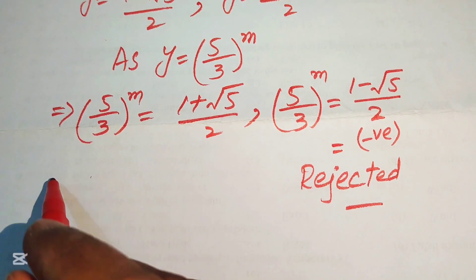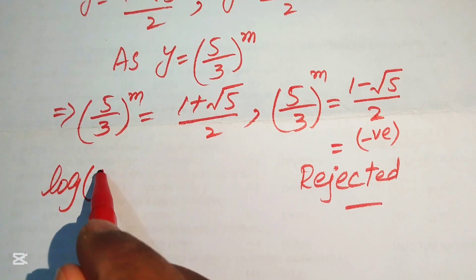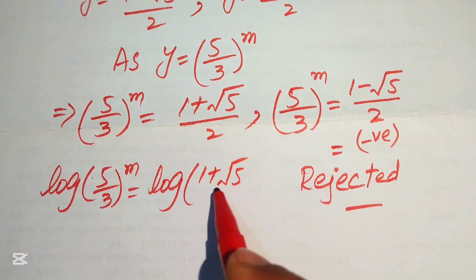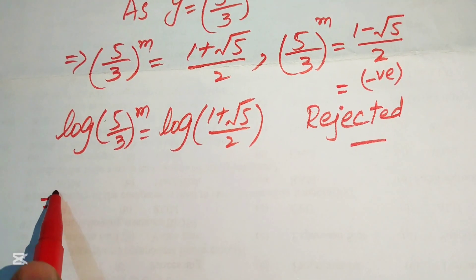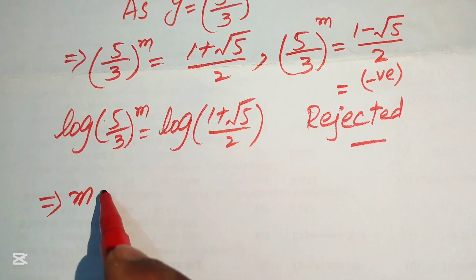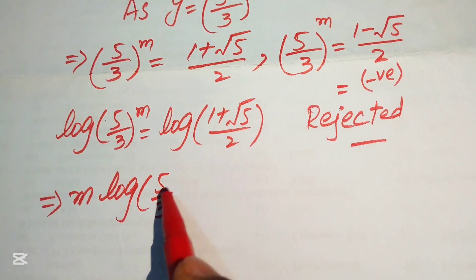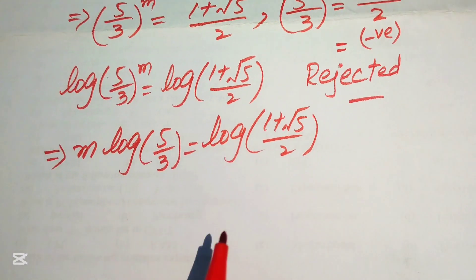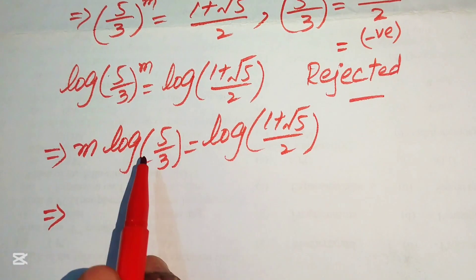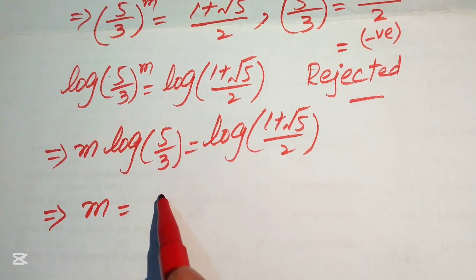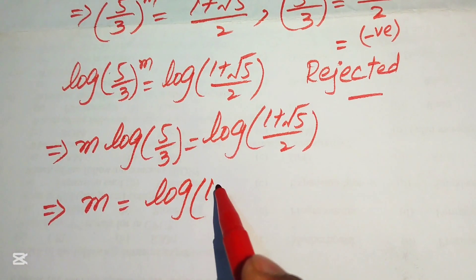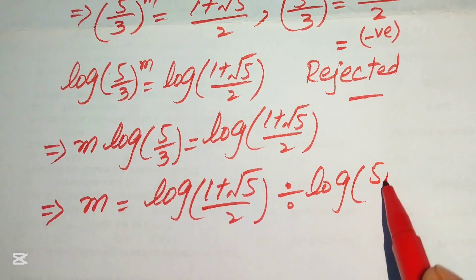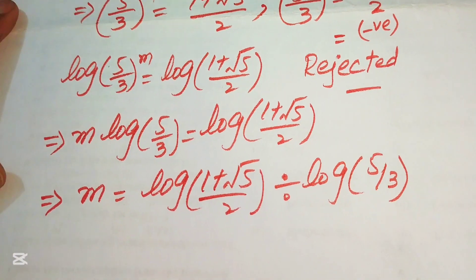To find m from (5/3)^m = (1 + √5)/2, we take the log of both sides: log of (5/3)^m equals log of (1 + √5)/2. We move the exponent m to the front: m times log(5/3) equals log((1 + √5)/2). Dividing both sides by log(5/3) gives m equals log((1 + √5)/2) divided by log(5/3).